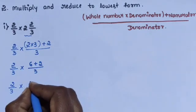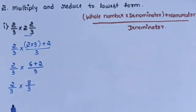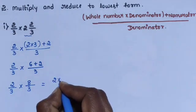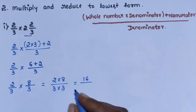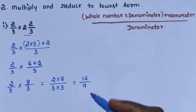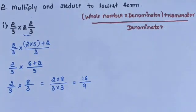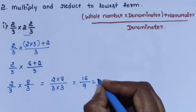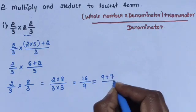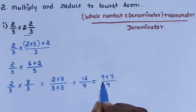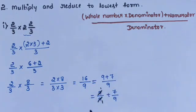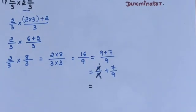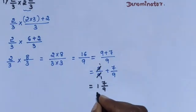2⅔ equals (3×2)+2 over 3, which is 8/3. Then multiply: 2/3 × 8/3 equals 2×8 divided by 3×3. 2 eights are 16, 3 threes are 9. 16/9 is an improper fraction; convert to mixed fraction: 9+7 divided by 9, giving the answer 1⁷⁄₉.